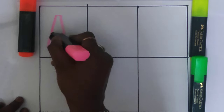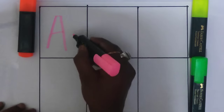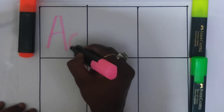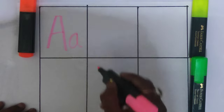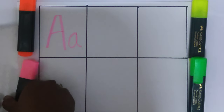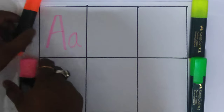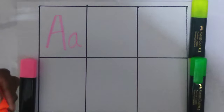Green. A. A for apple. Small a. A for apple. Orange color.